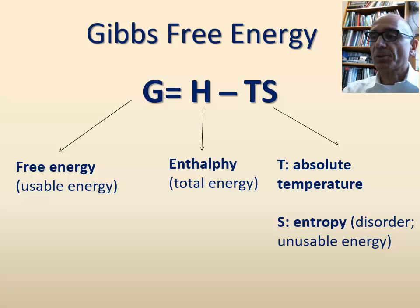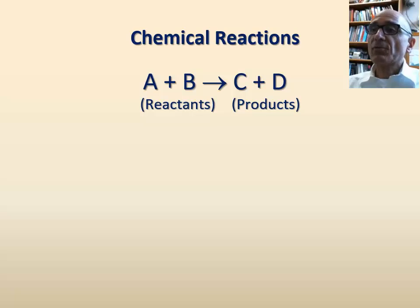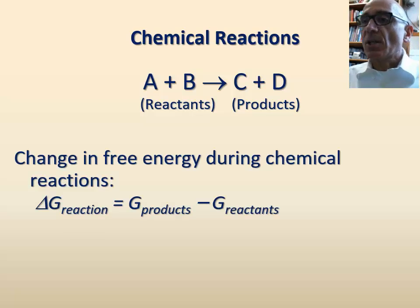For example, chemical reactions involve changes in the levels of free energy between the reactants and the products. These changes can be expressed in a mathematical form as delta G, which is the difference in free energy between the products and the reactants.